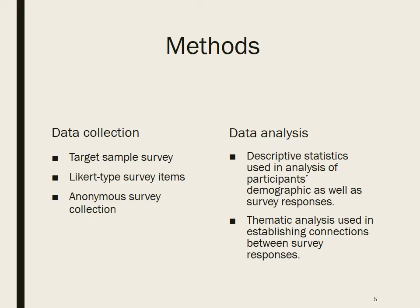The survey included five items requesting basic demographic information, such as years employed in education, years at the profile campus, and years in current teaching assignment. The remaining eight survey items used Likert-type items to assess the subject's satisfaction with organizational systems on their campus, how likely subjects are to return to their current campuses next year, and how likely subjects are to remain in the field of education altogether.